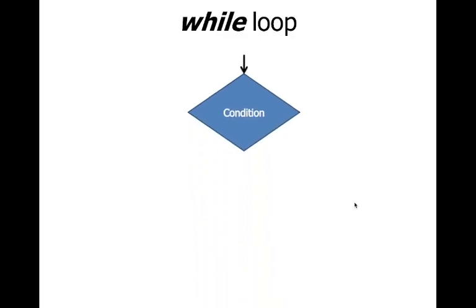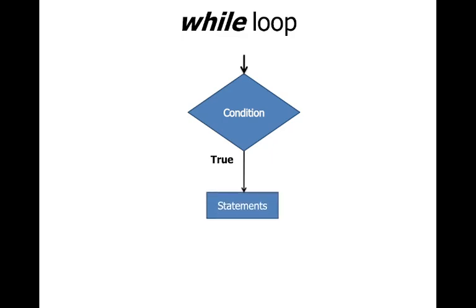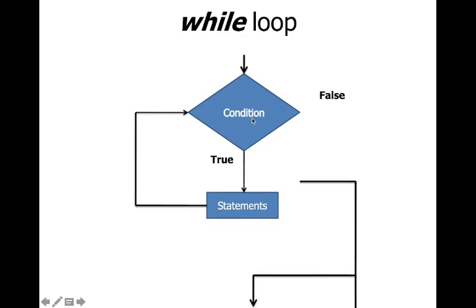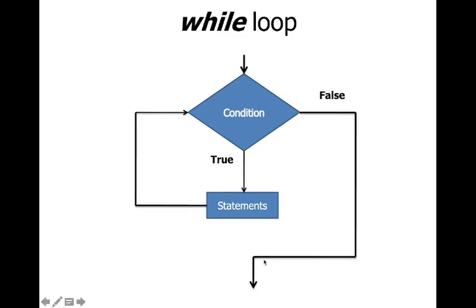The while loop is an example of an entry control loop. The condition is checked first; if it is true, the set of statements is executed. If the condition is false, the body of the loop is skipped. After executing the statements, it checks the condition again. This repeats continuously until the condition becomes false, at which point it executes the next statement after the loop.